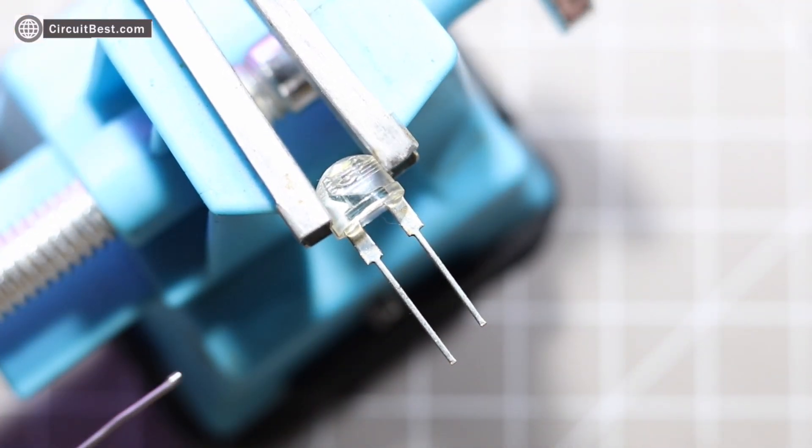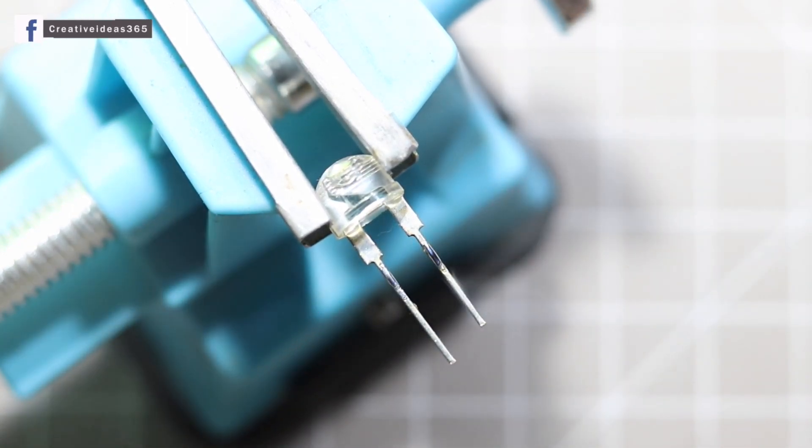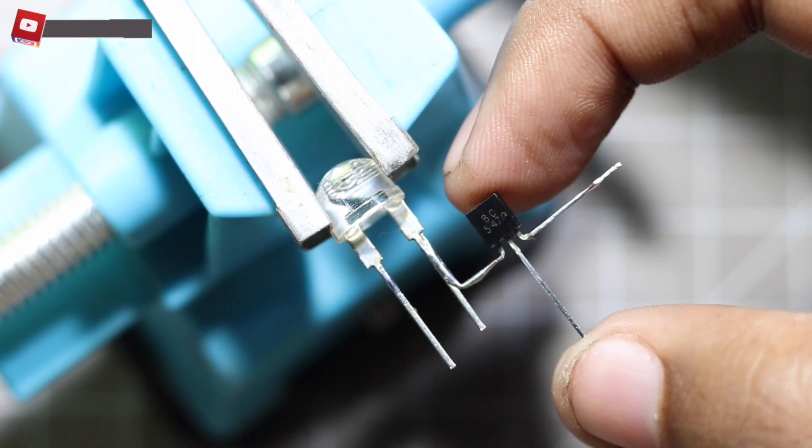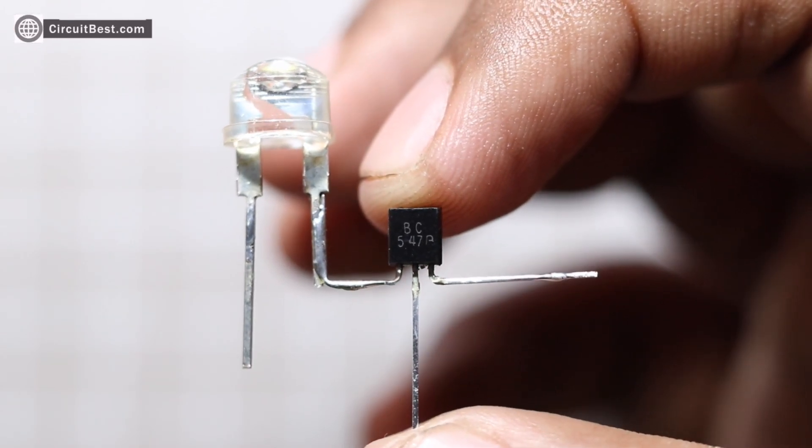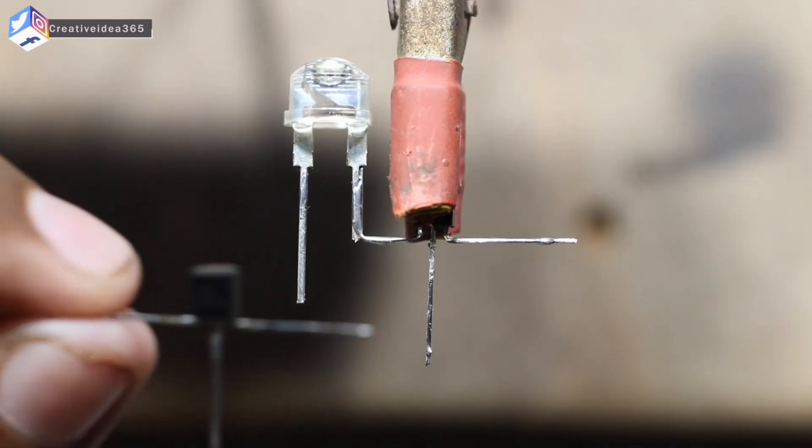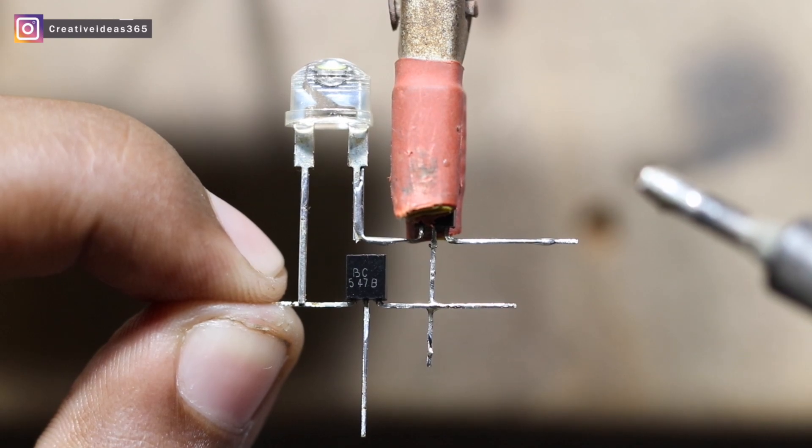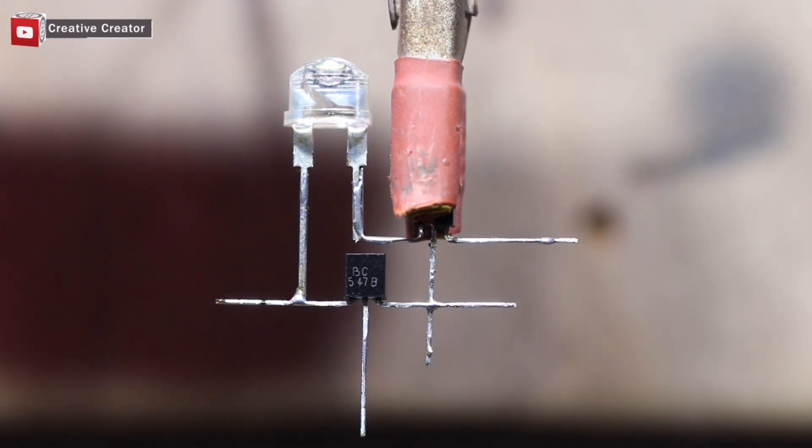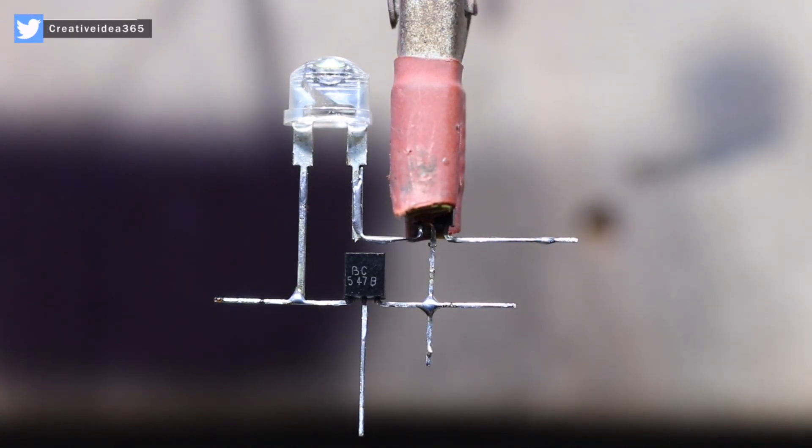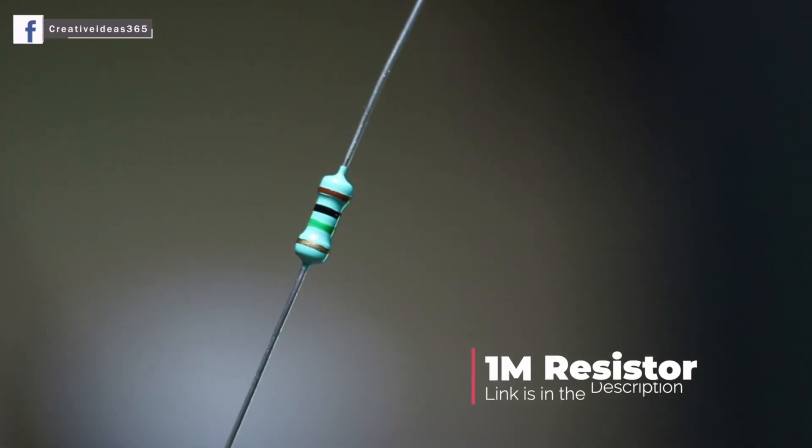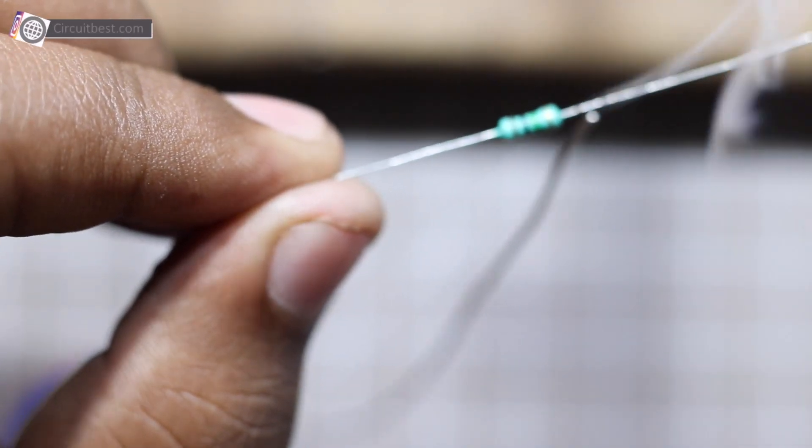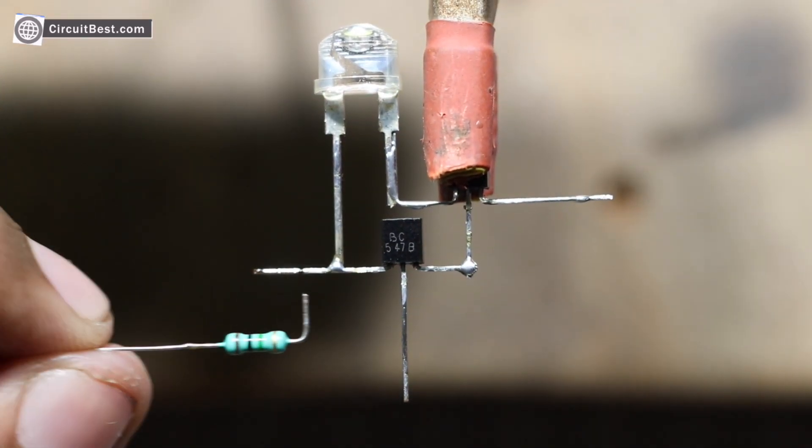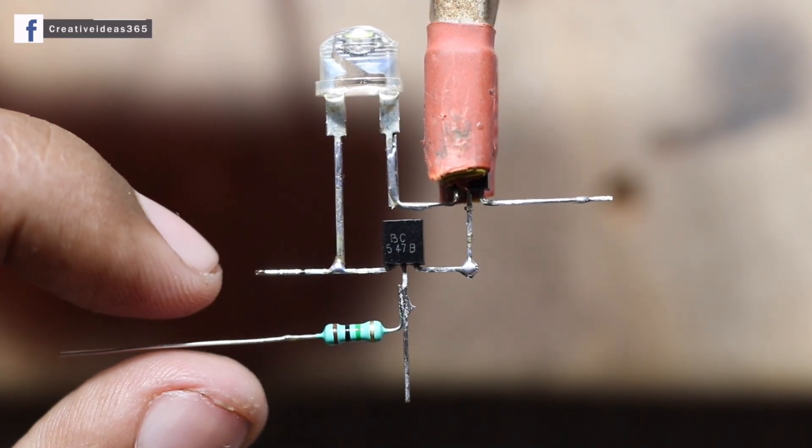As always, pre-solder all the components for better solder joint. Now connect the first transistor's base pin with the second transistor's emitter pin for signal amplification. Now I will make a voltage divider with 1M resistor and the diode.